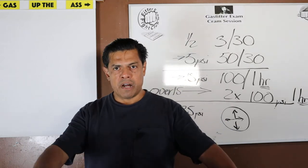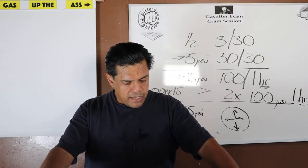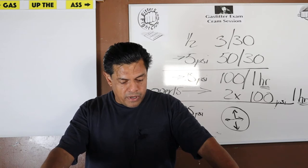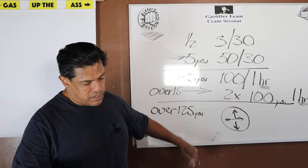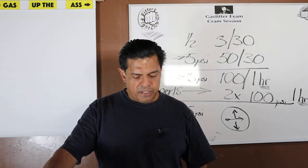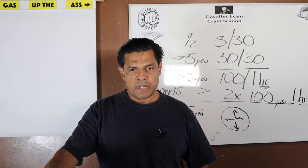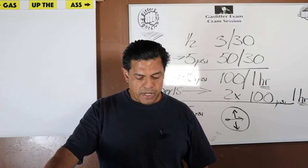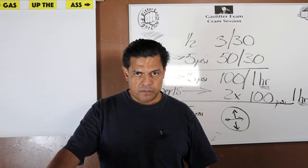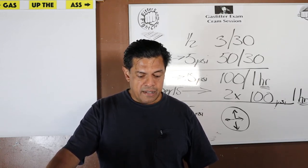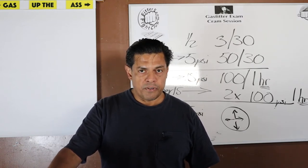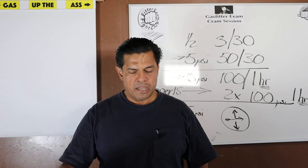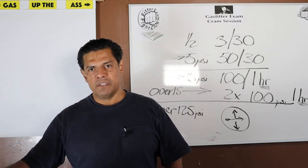Question seven: for gas distribution pressures requiring test pressures over 125 psi, the test pressure shall not exceed a value that produces a hoop stress greater than 50 percent of the minimum yield strength. That's a big sentence, but numerology is your friend on this exam. The key numbers are: over 125 psi, and no more than 50 percent of the minimum yield strength.